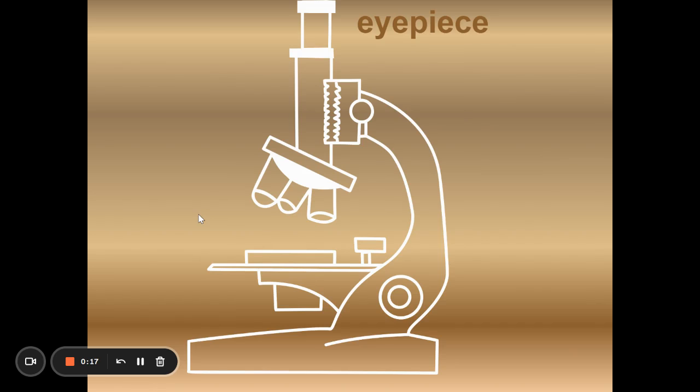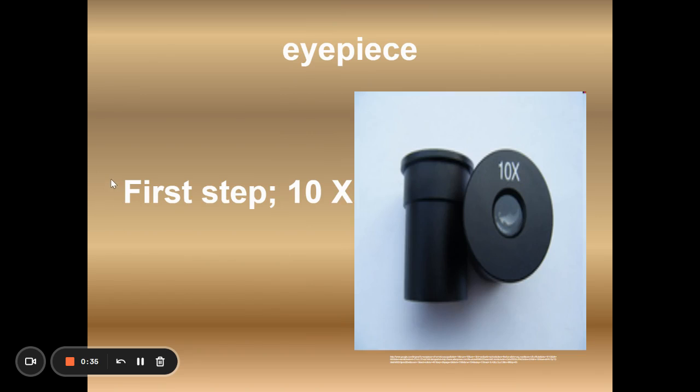They're compound because they have two different sets of lenses and they're light microscopes because they use light. The first set of lenses up at the top is the eyepiece which may also be referred to as the ocular lens. The eyepiece itself supplies a 10x magnification.